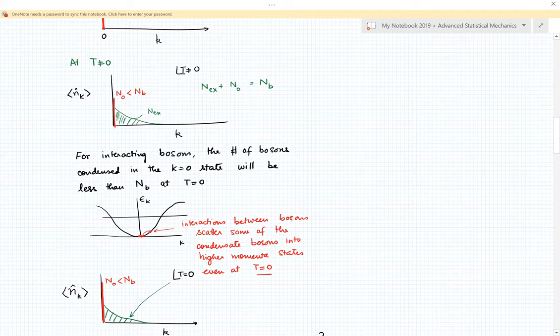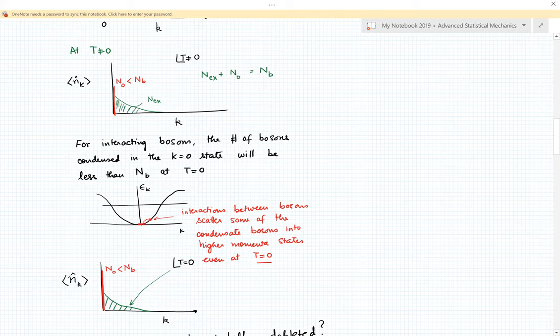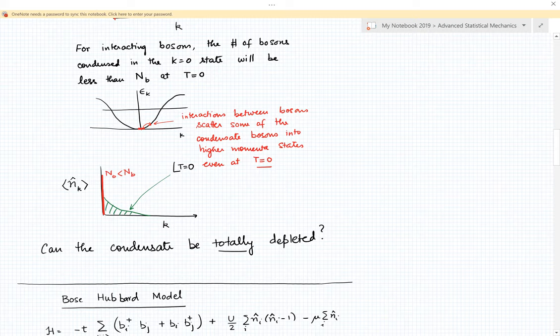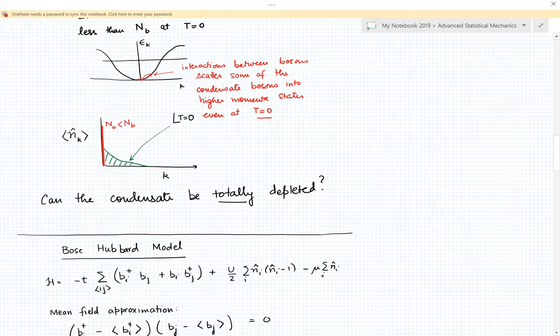The question we now want to ask is: suppose we remain at zero temperature but increase the interactions between the bosons, then what happens? We can see qualitatively that due to the interactions some bosons will get scattered out of the condensate into higher momenta states. So even at zero temperature we will get a depletion of the condensate. This is not happening due to thermal fluctuations, it's happening due to the interactions between the bosons. The question we want to ask is: can the condensate be totally depleted?